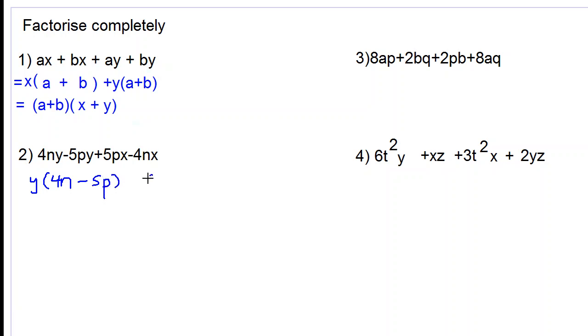We want to get the same bracket over here, 4n minus 5p. So we have to ask ourselves, what do we take out? What do we multiply by 4n to get minus 4nx? The answer is minus x.